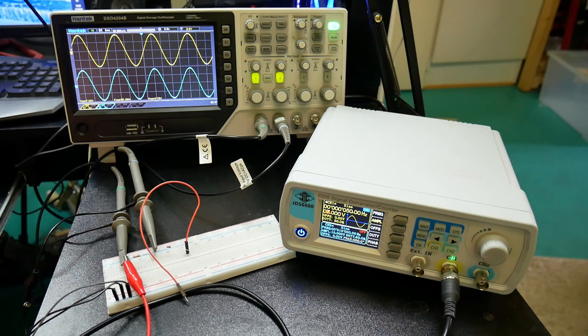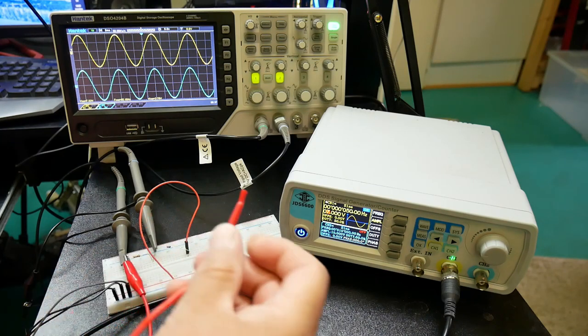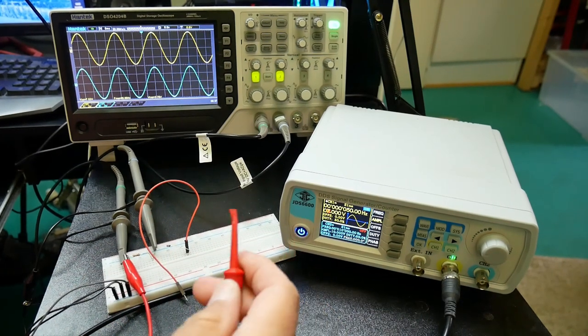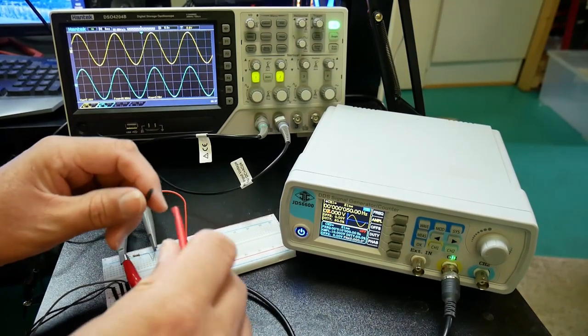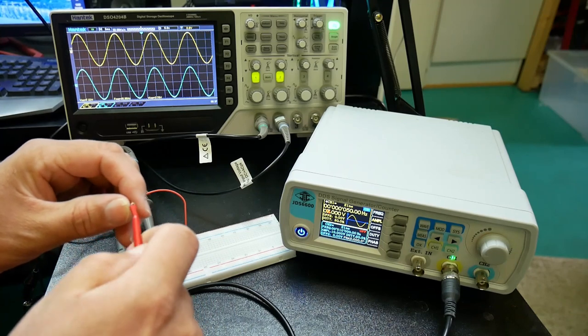Now if you want to clamp the voltage then what you do is you take a reference voltage which is from a DC power supply and this is 5 volts. And then you connect it to the other end of the diode.